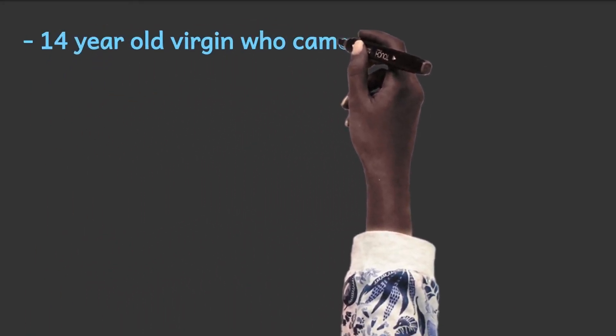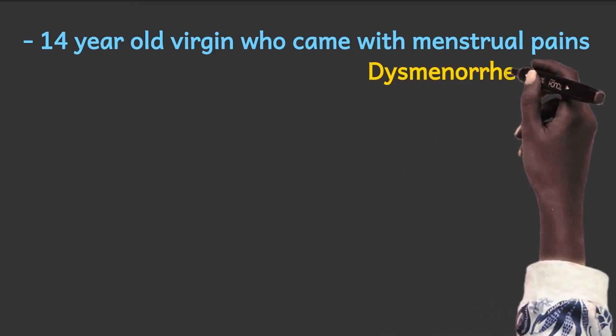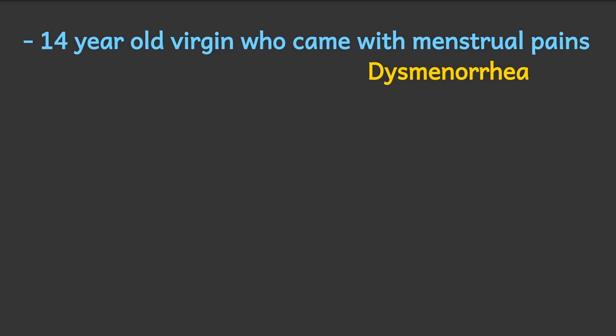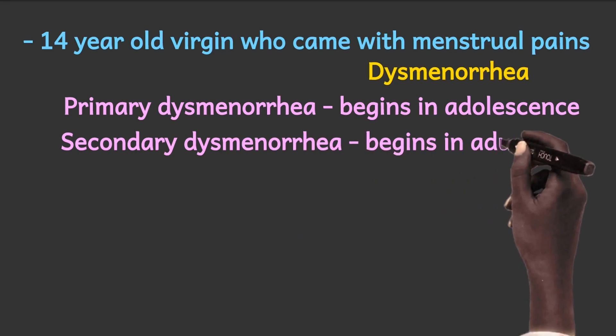Now, to the explanation of the relevant information. We are dealing with a 14-year-old virgin who came with menstrual pains, and by definition, menstrual pain is dysmenorrhea. Whenever a patient presents with dysmenorrhea, the next step is to determine whether it is primary or secondary. One distinguishing feature is the age at which the dysmenorrhea started. Primary dysmenorrhea typically begins a few months to years after menarche — that is, in adolescence. So it is very clear that this patient is likely to have primary dysmenorrhea. Secondary dysmenorrhea, however, starts in adulthood.